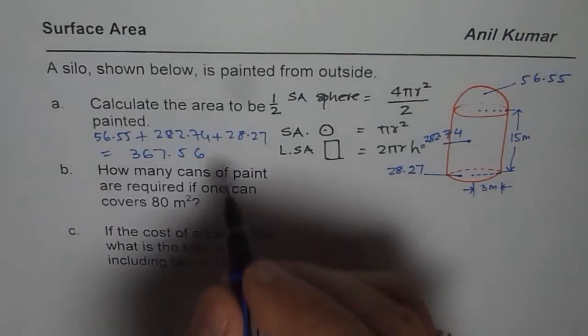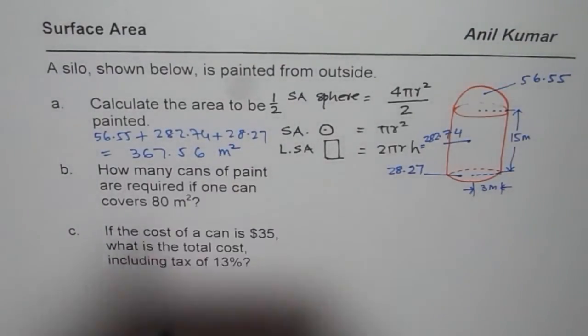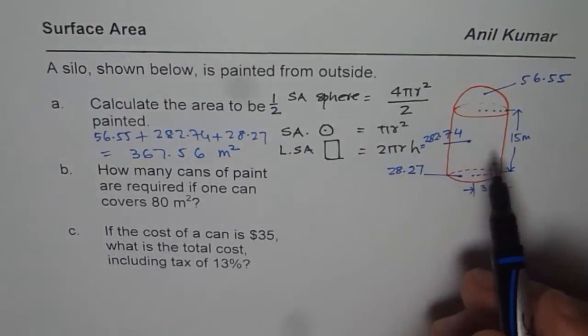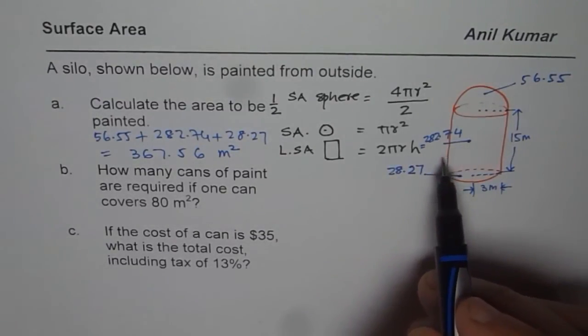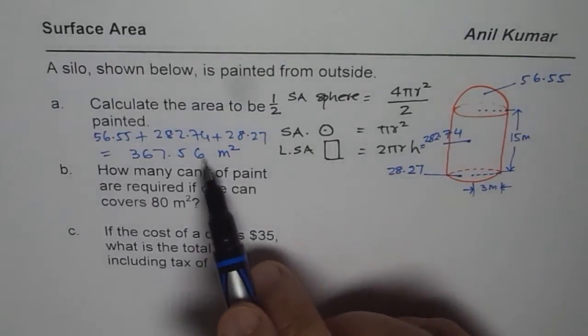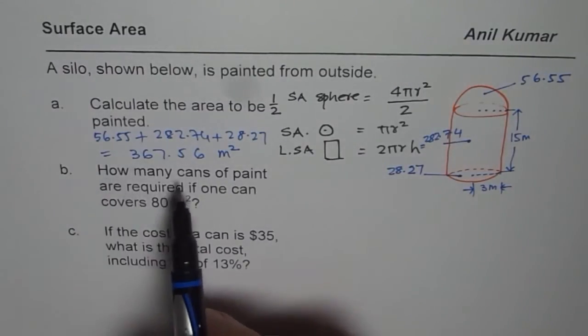You may get a different value because of the rounding, but anyway round to one decimal place at the end, that should be good enough.